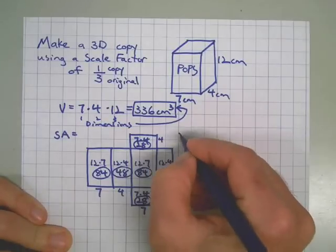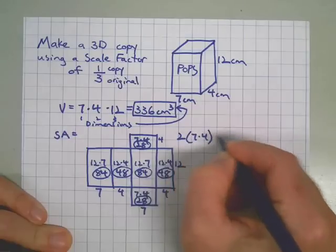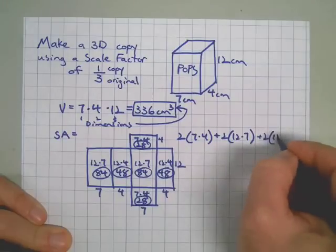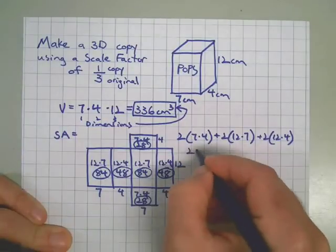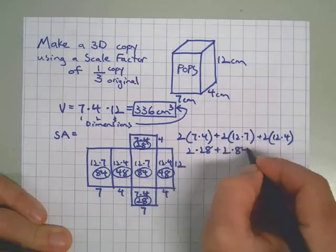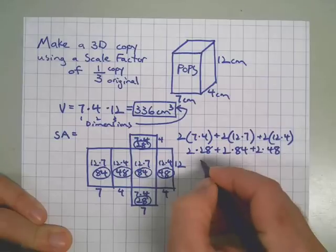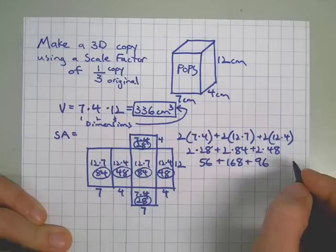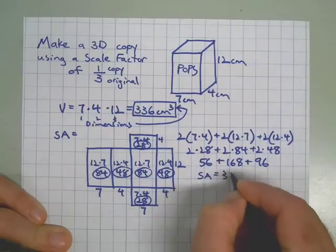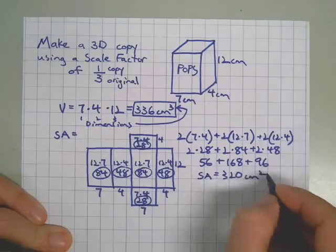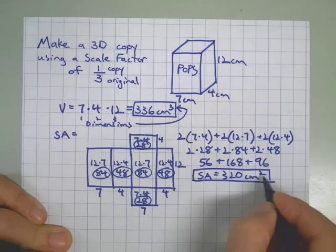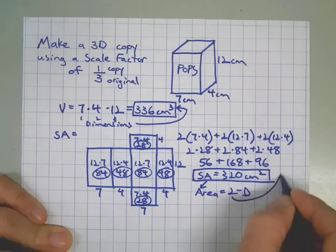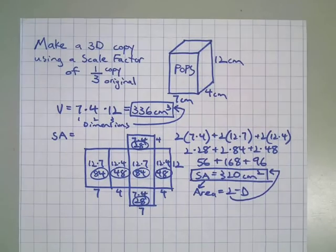And here we go. So we've got 2 sides at 7 times 4, plus 2 sides at 12 times 7, plus 2 sides at 12 times 4. Let's simplify that one step at a time: 2 times 28, plus 2 times 84, plus 2 times 48, makes 56, plus 168, plus 96. And now we're finally down to our surface area is 320 centimeters squared. The little 2 up here, since we're dealing with area, that's what the A stands for. Area is 2 dimensional. Therefore, the 2 always goes up there. So there we've got all the measurements of the original.